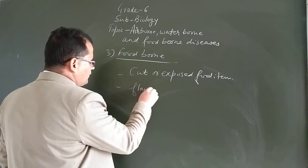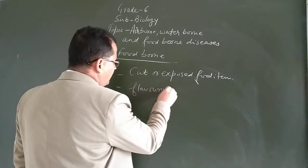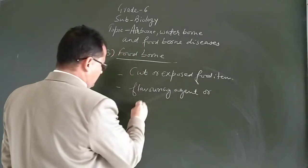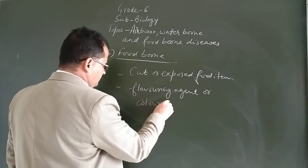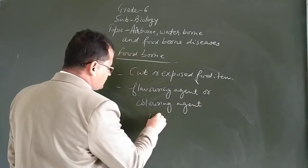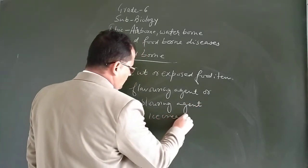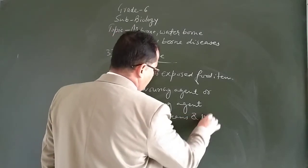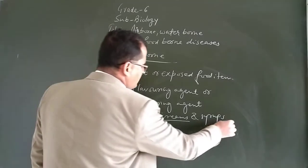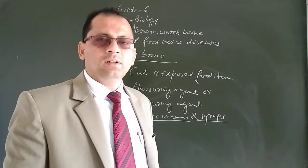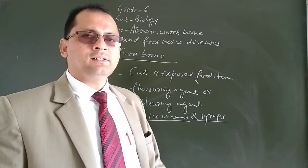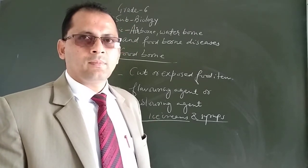Second is flavoring agents or coloring agents. These are chemicals which are added in ice creams and syrups. These are harmful for the body and will make us diseased.